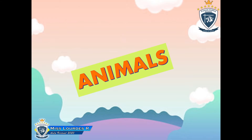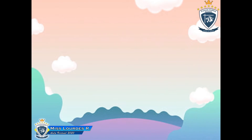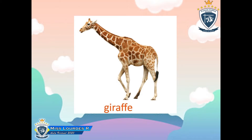We are going to talk about animals. Let's see some new vocabulary. Let's start. Let's look at the first picture — what animal is it? It is a giraffe! Yes, it is a giraffe. Very good, excellent! Repeat after me: giraffe. One more time — giraffe. Excellent, very good!